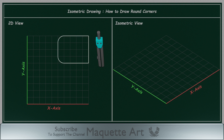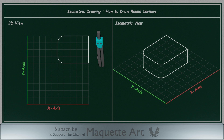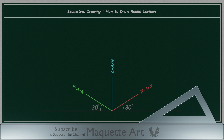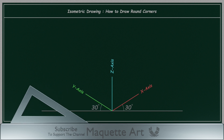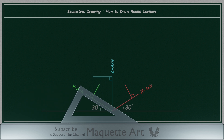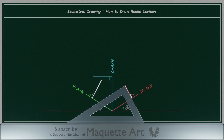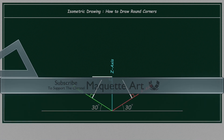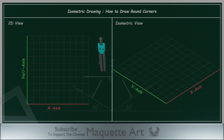In this video, I will explain how to draw round corners. So instead of having sharp corners like this, we will add round corners with a specific radius. Before we start, there is another point I want to explain. We already know that the X and Y axes are at 30 degrees from the horizontal, and the Z axis is a vertical line, and you will be using the T-square and triangle to draw them. Now, how can we draw a perpendicular line to each of those axes? For the X and Y axes, we will use the triangle like this, and for the Z axis, we will use the T-square.